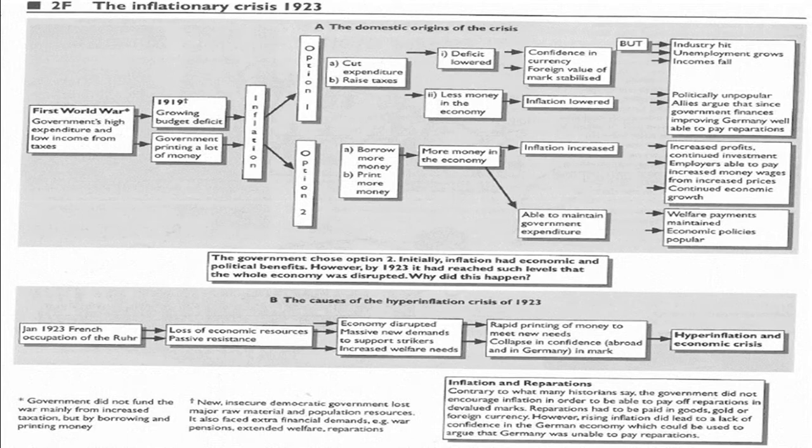By 1923, inflation had reached levels that disrupted the whole economy. This links to the French occupation of the Ruhr and the government's response — telling people to stay off work as passive resistance while still getting paid. The printing of more and more money led to the hyperinflation crisis of 1923. So that's the causes.